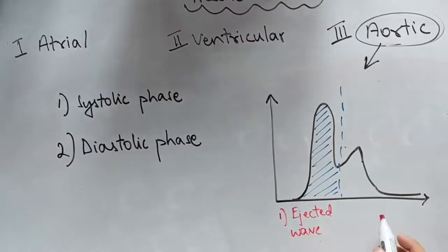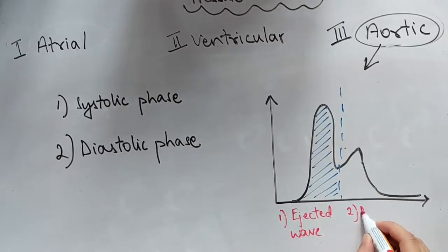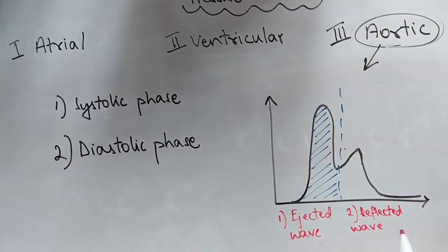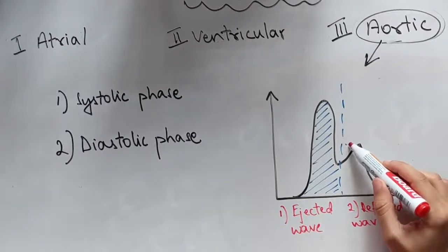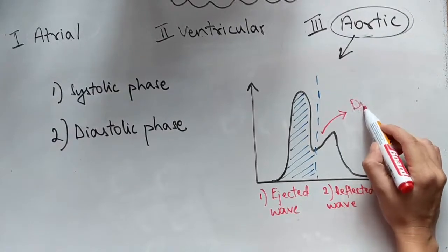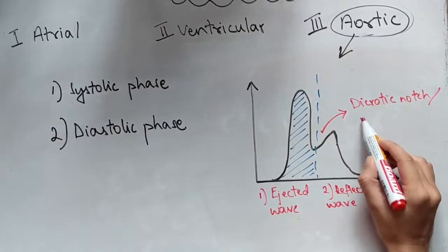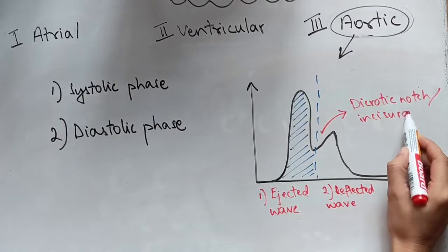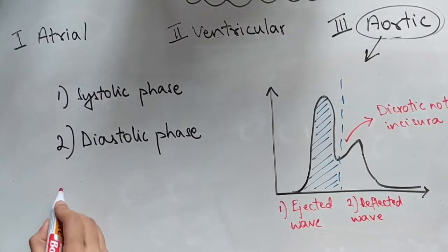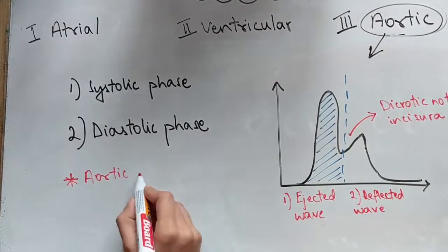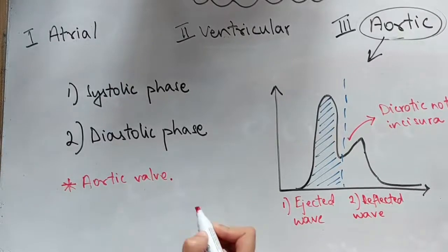What you need to know about this graph is the notch between both the waves and this is called the aortic valve. The notch is caused by the aortic valve bulging backwards into the left ventricle under the weight of the aortic pressure when it closes.